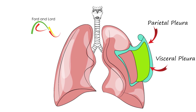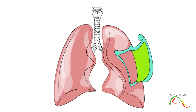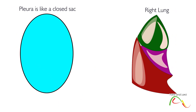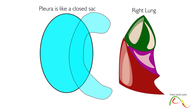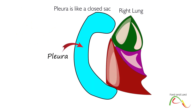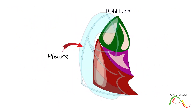The pleura is classified as a serous membrane. A serous membrane is defined as a two-layered membrane which is composed of mesothelial cells. A serous membrane is simply like a sac with no opening — it's wrapped around the organs and is completely airtight.